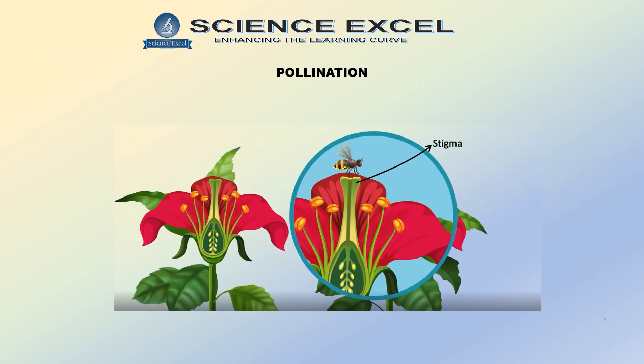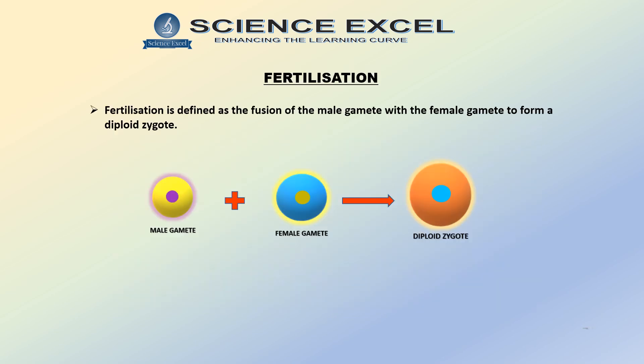In our previous video, we had examined how pollination takes place in plants. So what is the next process after pollination? You are right if you said fertilization. Fertilization is defined as the fusion of the male gamete with the female gamete to form a diploid zygote.